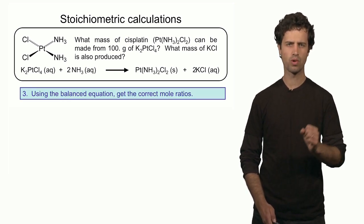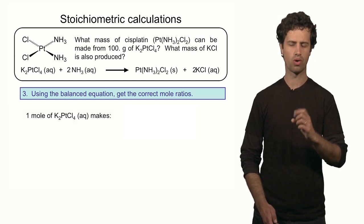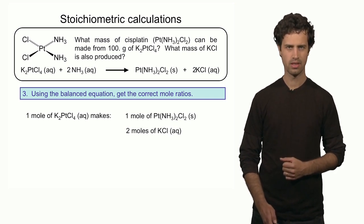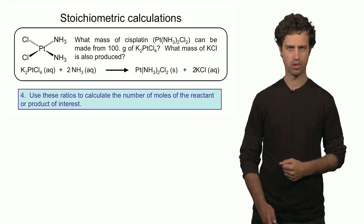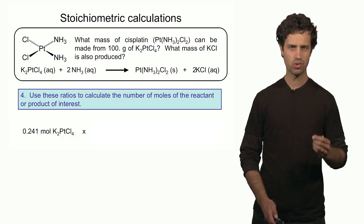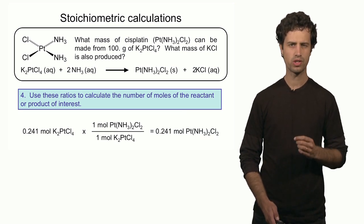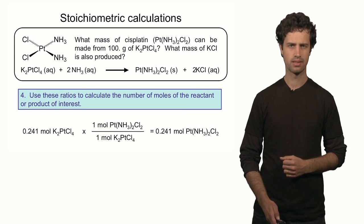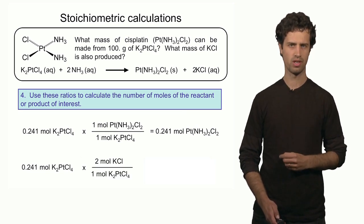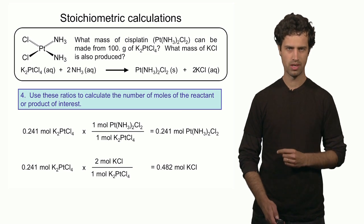The next step is to convert the moles of the reagent into moles of the product using mole ratios. For each one mole of the reagent, we form one mole of cisplatin and two moles of potassium chloride. So, 0.241 moles of the reagent times the mole ratio gives 0.241 moles of cisplatin. Similarly, 0.241 moles of the reagent times the mole ratio gives 0.482 moles of potassium chloride.